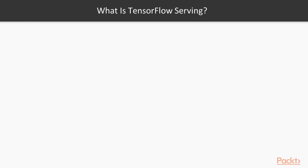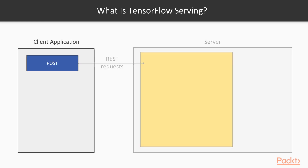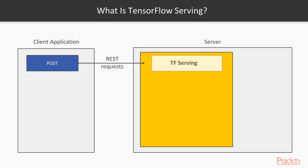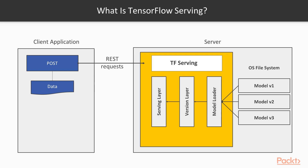So what is TensorFlow Serving? This is the main architecture of it. As you can see on the left side, you have a client application that posts a request to a server where TF Serving is running. TF Serving handles a lot of things in the background for you — for example, it accesses the file system where you can manage different versions of your model, ensures those models are correctly loaded and served in a scalable way. It basically provides a framework where you can take your model exported in the saved model format and provide it using a simple REST interface to clients.